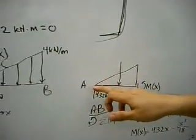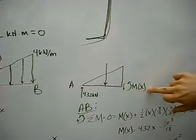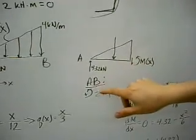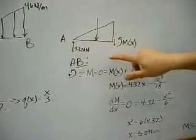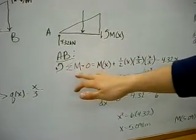If we take a section between A and B, this is the positive moment here at the end, and this is the shear. We're going to sum moments at this point, assuming X is going this way. For section AB, sum of moments equals zero.